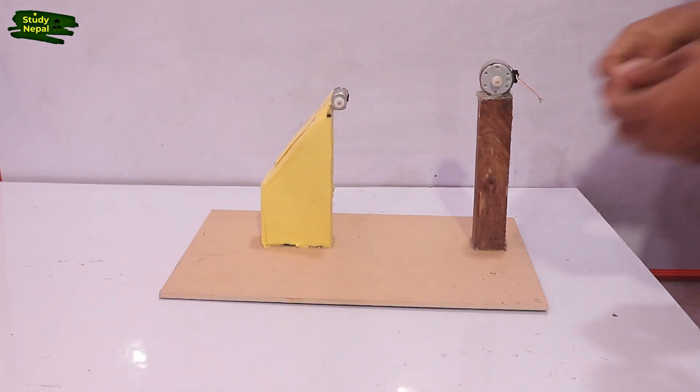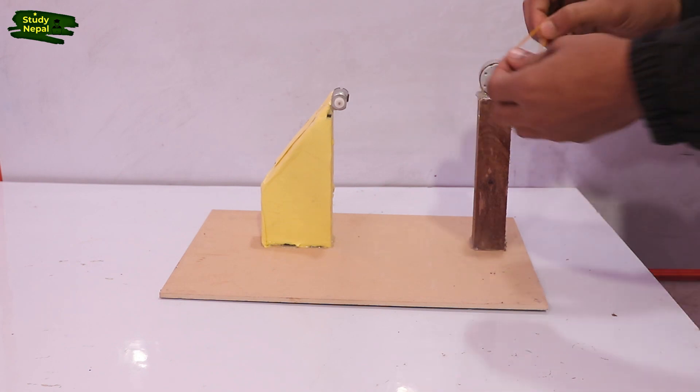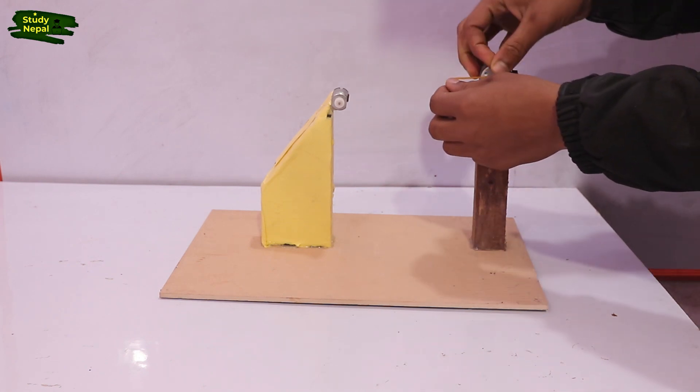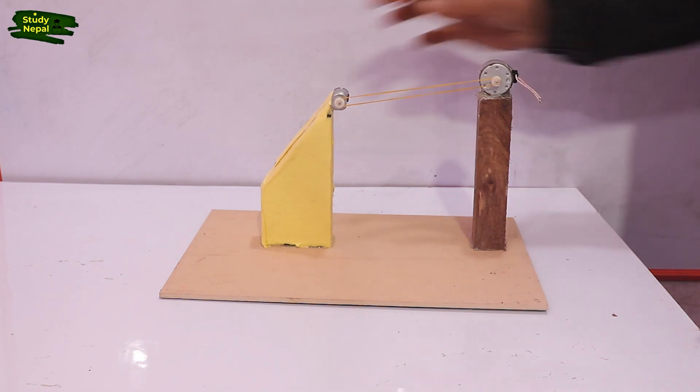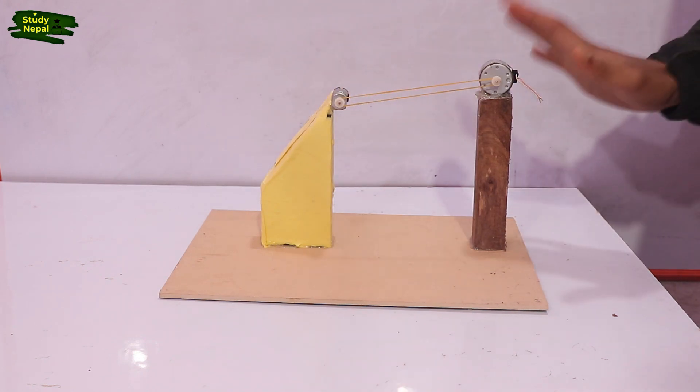As you can see, here are the two motors. Now I am going to tie elastic gear so that it works as a dynamo. By moving this motor, this motor also will move and the electricity will produce in this motor if we give the charge here.